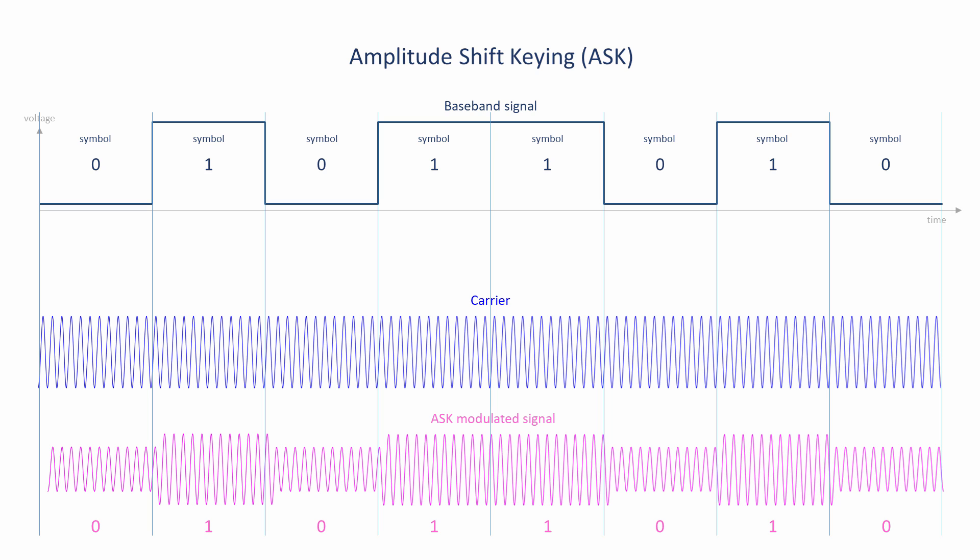The number of bits transmitted per second is known as the baud rate. The simple implementation of amplitude shift keying that you can see here has a baud rate that is equivalent to the symbol rate.